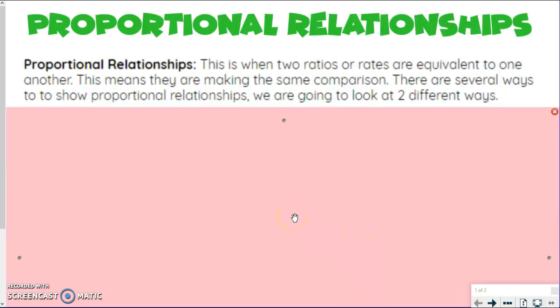So proportional relationships, this is when two ratios or rates are equivalent to one another. This means they're making the same comparison. So even though the numbers might be bigger or smaller, the comparison between those numbers is the same no matter what. There are several ways to show the proportional relationships, but we are going to look at two different ways specifically that we'll constantly come back to.